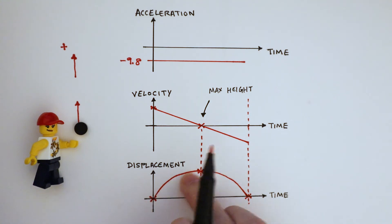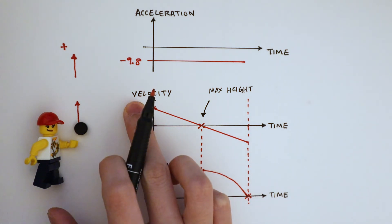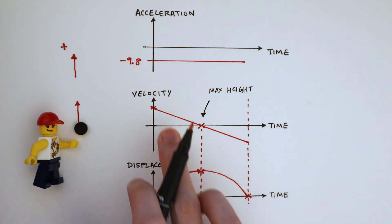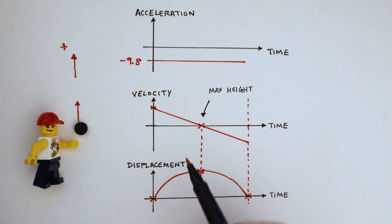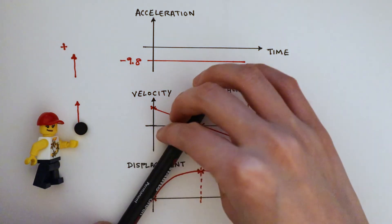The gradients of a displacement time graph represents velocity. We know that its velocity is decreasing in magnitude, so the gradients of this part of the graph must be decreasing, getting less steep.